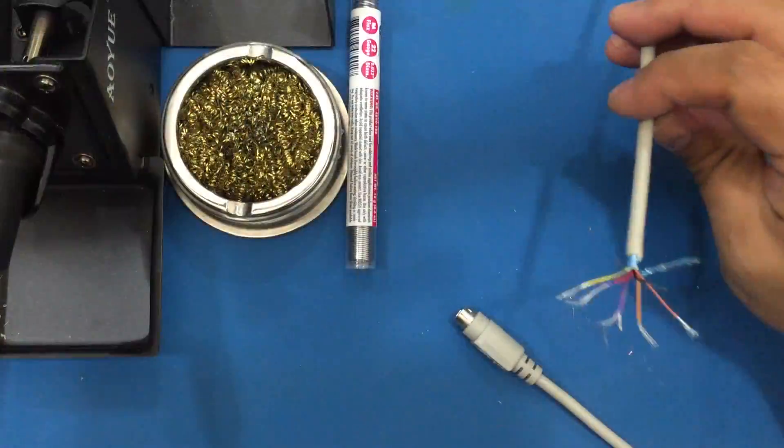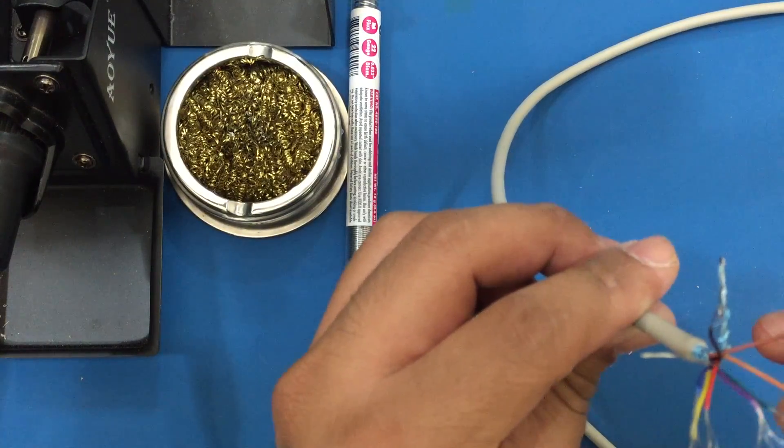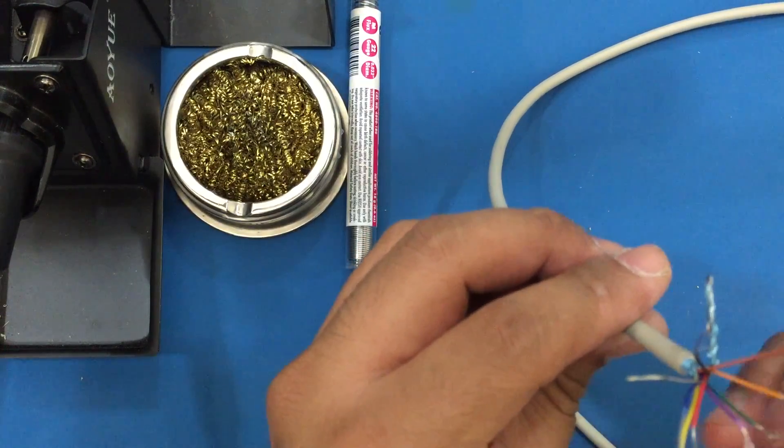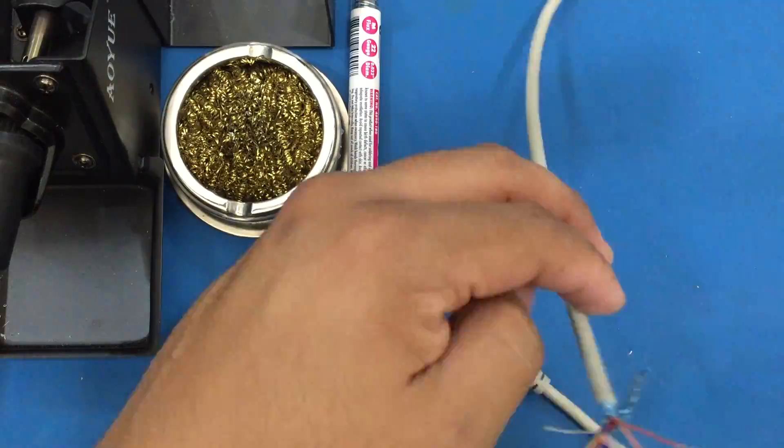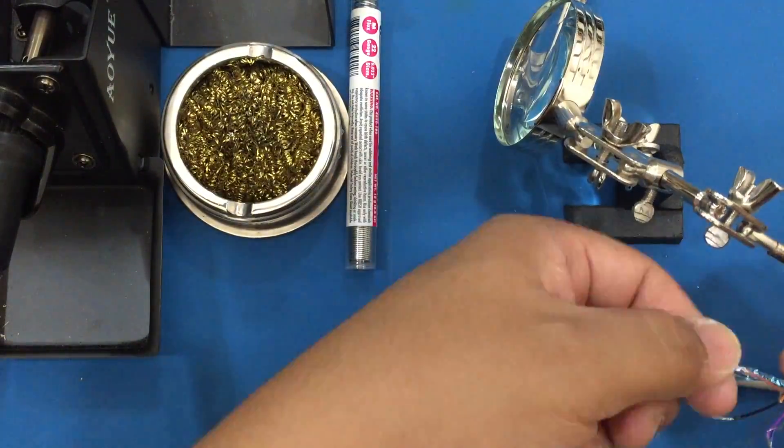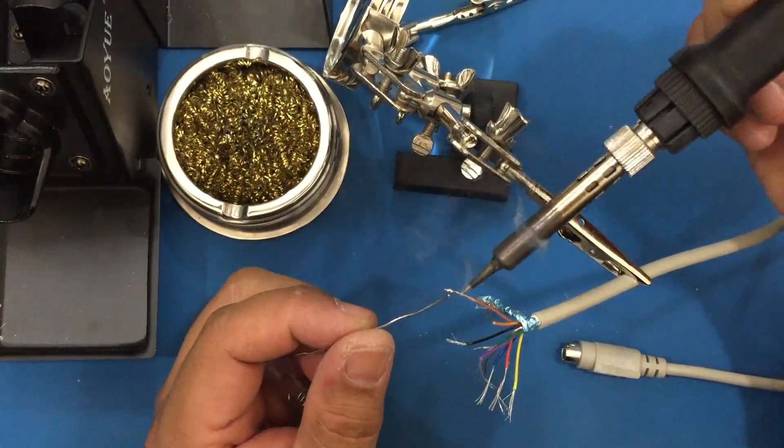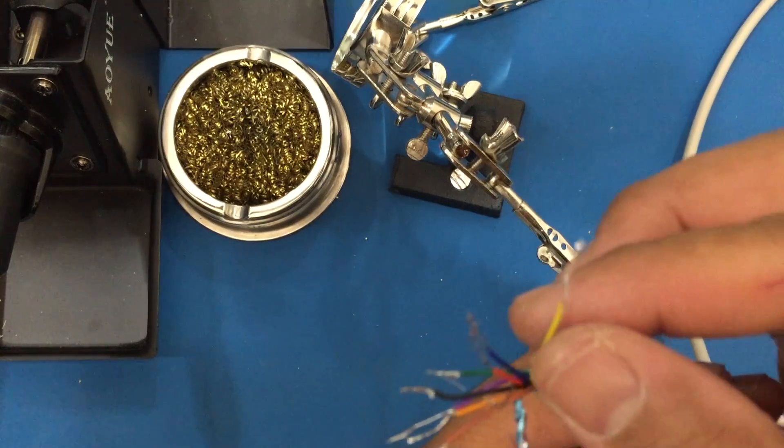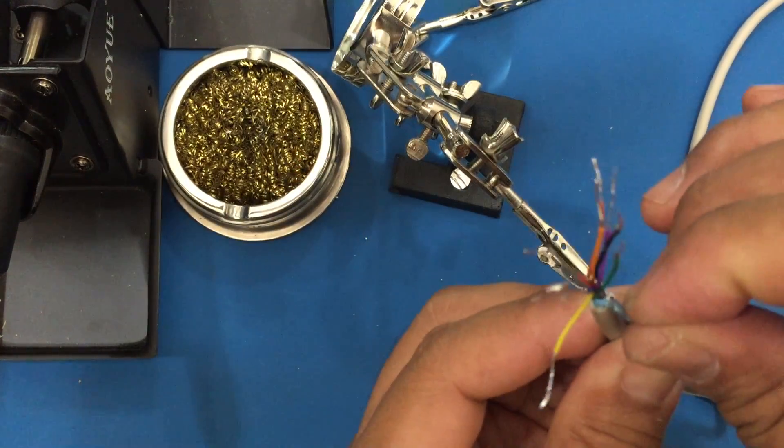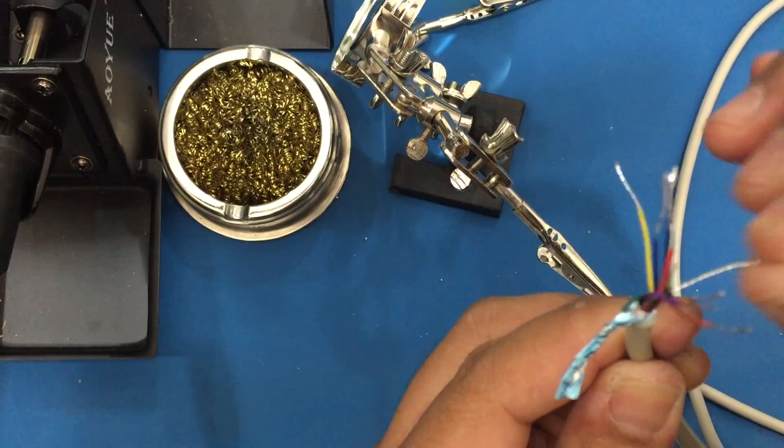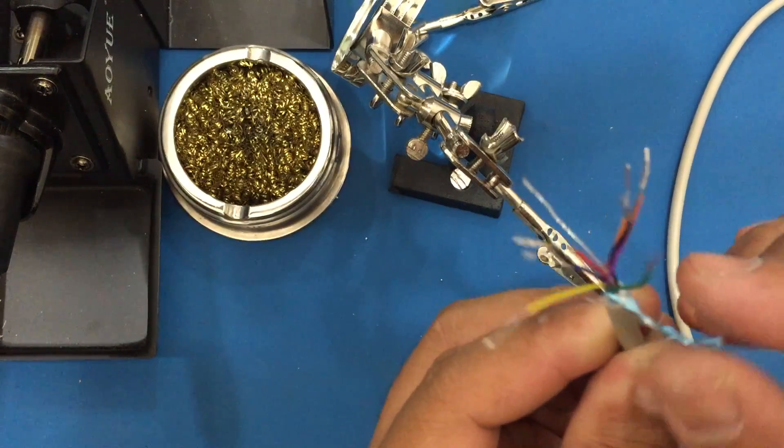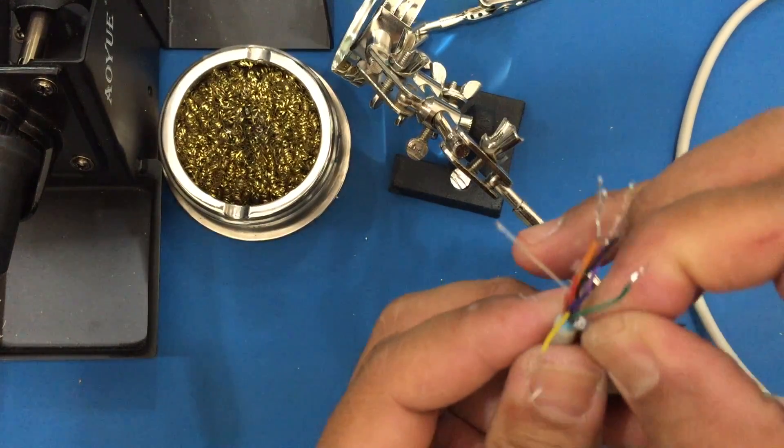Now we're just going to twist together the wires on the mini DIN cable and pre-tin these wires. Okay we got everything tinned. This cable actually has a bare drawn wire that's connected to the shielding. So we can actually cut the shielding off.